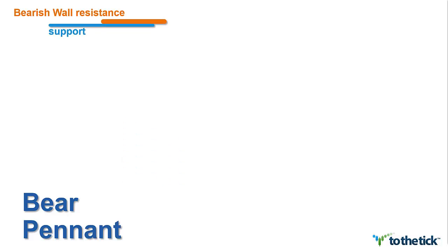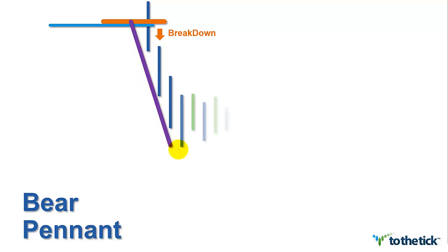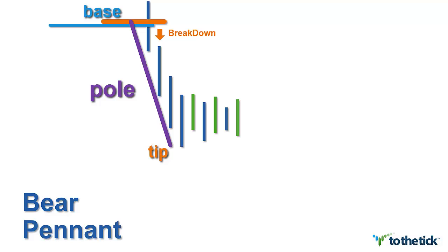First, we're going to focus entirely on a bearish pennant where it might lead into that continuation of trend, and we have to establish a reference point. The bears are smashing into a big base of support that the bulls have held for a while. They must get through that line and then prove they can hold it as a new breakdown. We will then watch the formation of part one of our price pattern, which is the pole.